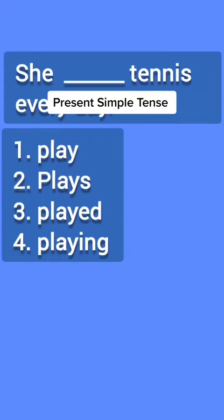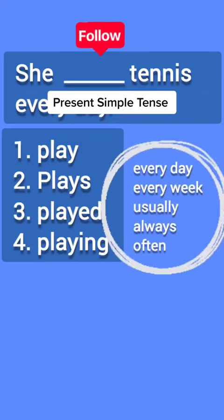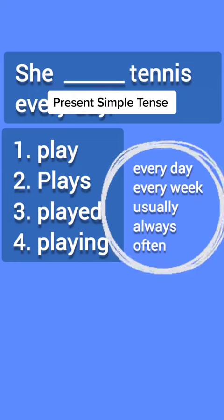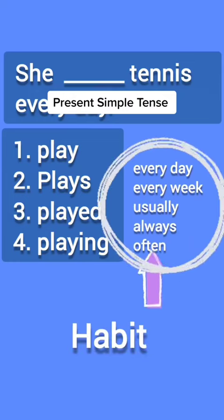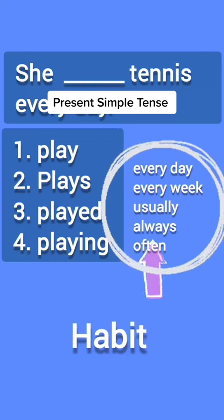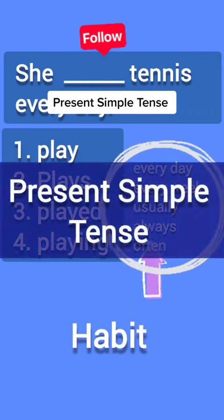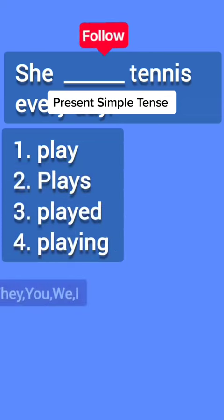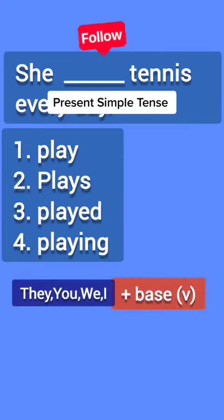She blank tennis every day — play, plays, played, or playing? Remember, when you see words like every day, every week, usually, or always, this means the action is repeated over and over, so it is a habit. For habits, we use the present simple tense.